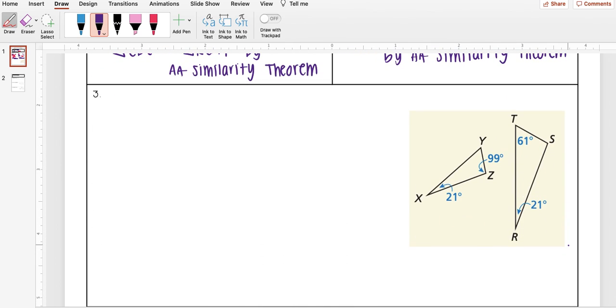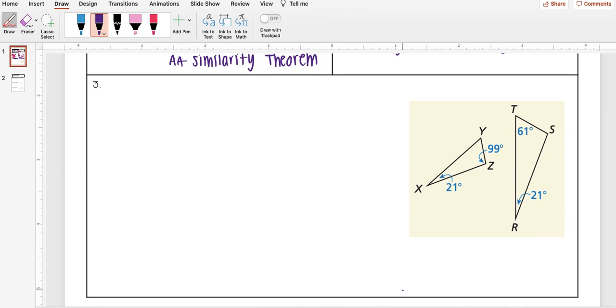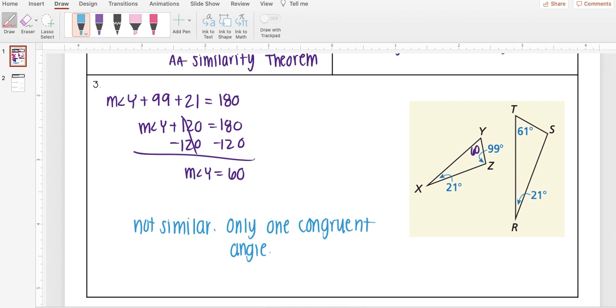Okay, go ahead and pause the video. I want you to try number three. So the answer you should have gotten here was not similar. When I solved for the measure of angle Y, I got 60 degrees. And so that means that these two triangles, they only have one congruent angle of 21. Since 60 was not 61, this isn't going to be similar.